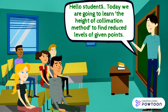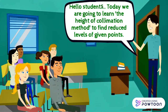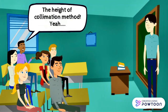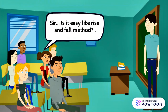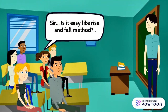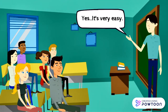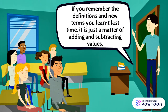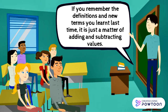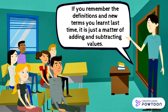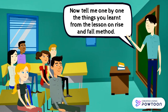Hello students, today we are going to learn the height of collimation method to find reduced levels of given points. A student asks: 'Sir, is it easy like the rise and fall method?' Yes, it's very easy — if you remember the definitions and new terms you learned last time, it is just a matter of adding and subtracting values.